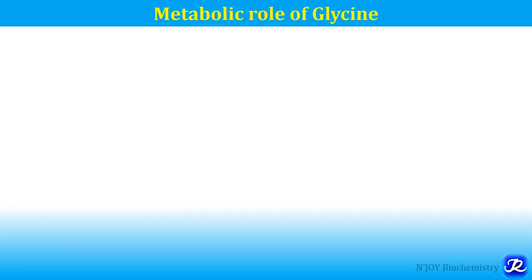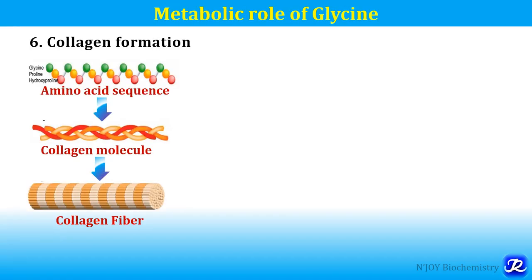The next metabolic role of glycine is formation of collagen. Collagen has three important amino acids: glycine, proline, and hydroxyproline, and it has a rich content of glycine — about 30%. In fact, every third amino acid in the structure of collagen is glycine, because glycine is very small and is easily accommodated in the limited space available along the central axis of the triple helix structure of collagen.